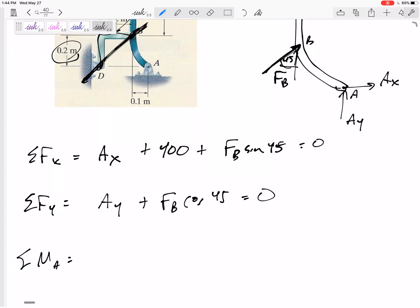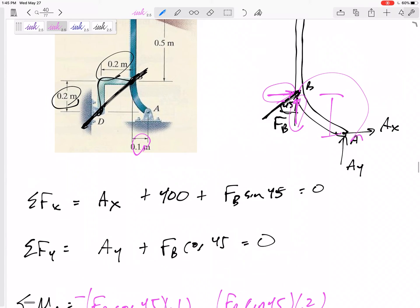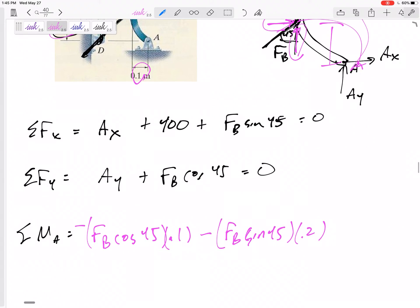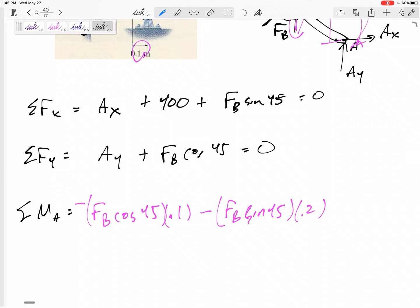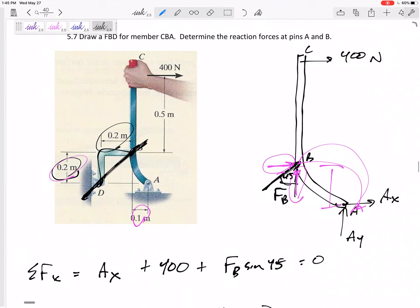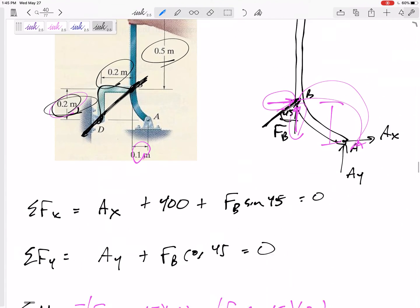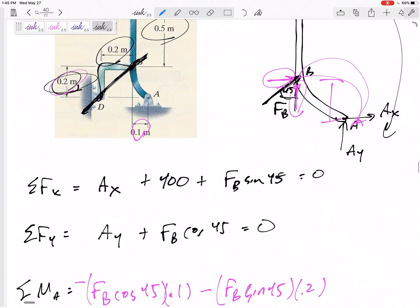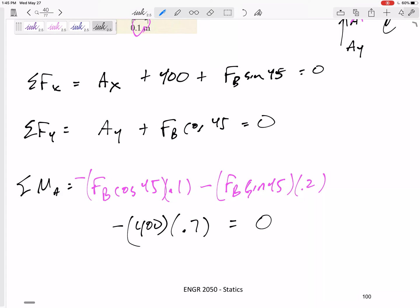This FB, I'm not so sure if I could find its perpendicular distance, so let me break this into its two components. FB cosine 45 is right here going up and it is 0.1 away, creating a negative moment. FB sine 45 is this one right here. It is 0.2, creating also a negative moment. But then I've got that 400. Its perpendicular distance is 0.5, 0.2, 0.7 creating a clockwise negative moment equals 0.